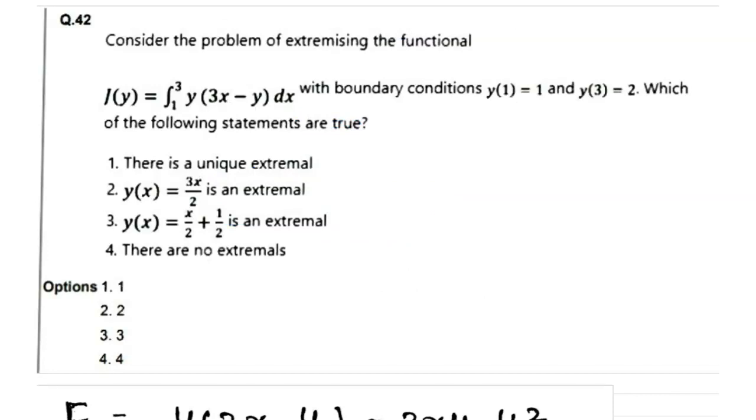The next question is from Part C. The question says: consider the problem of extremising the functional J(y) equals integration between 1 to 3 of y times (3x - y) dx with boundary conditions y(1) equals 1 and y(3) equals 2. Which of the following statements are true?